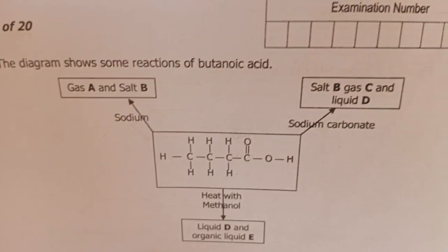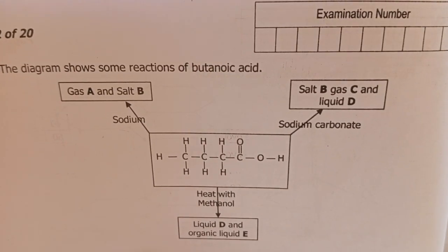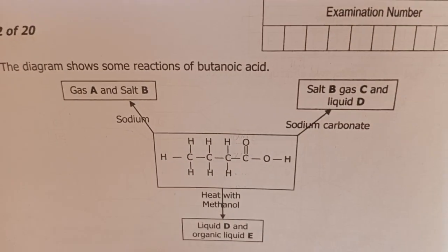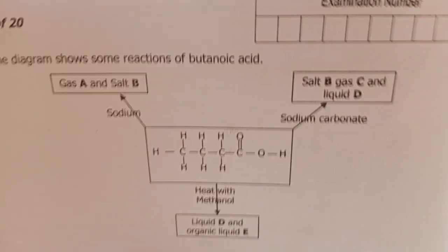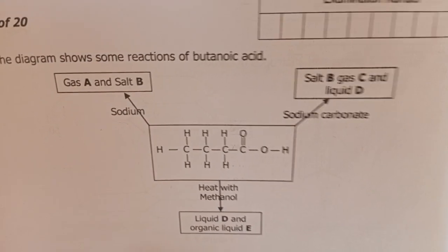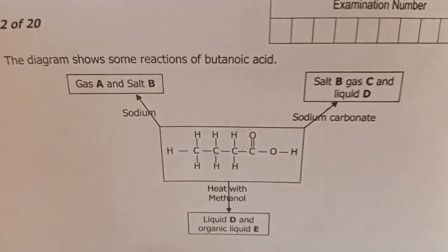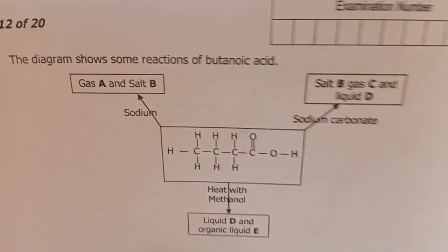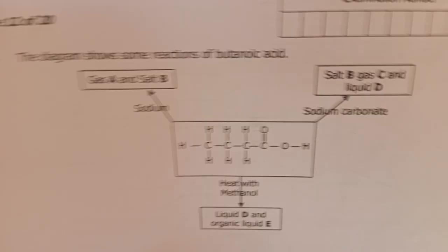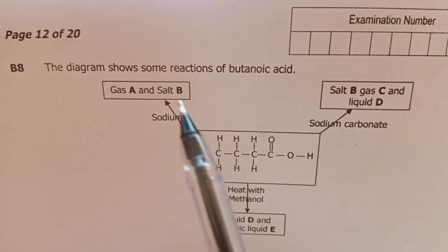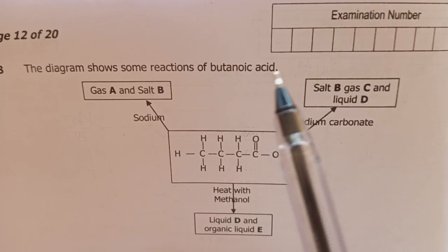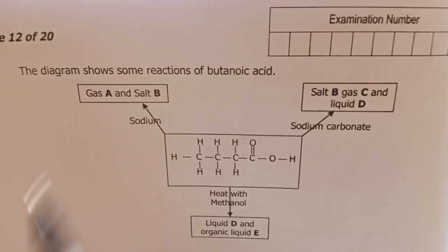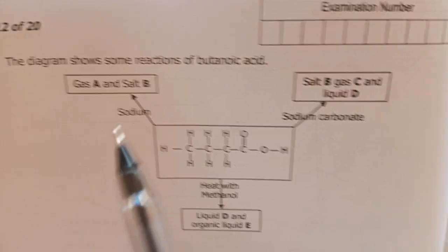In the case of organic acids, the salt carries the name of the metal and the name of the organic acid with '-oate' as a suffix. So the product is sodium butanoate. If there was ethanoic acid, you would have sodium ethanoate plus hydrogen gas.